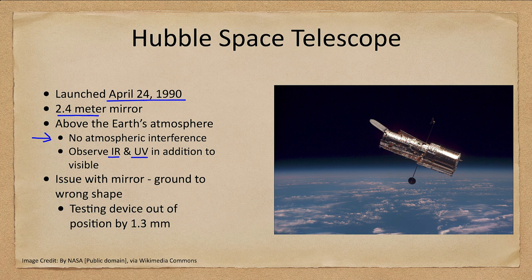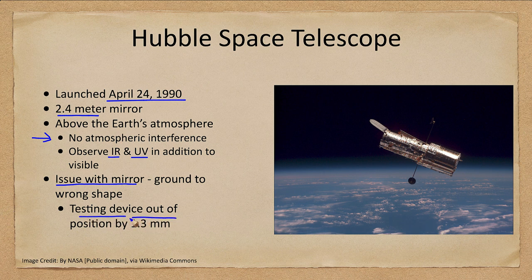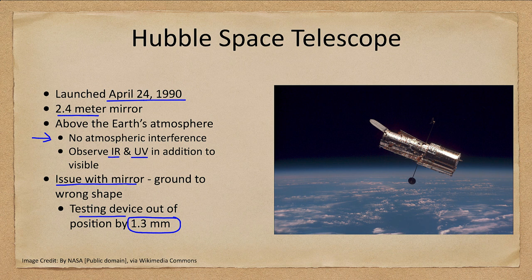When Hubble was initially launched, the images were no better than those taken from the ground, which was of great concern. It turned out the mirror had been ground incorrectly — just slightly to the wrong shape. A testing device was out of position by a very tiny amount, 1.3 millimeters, but enough to throw off the mirror's shape. Since the error was known, a future shuttle mission was able to adjust the optics and give Hubble the crystal clear vision that was expected.